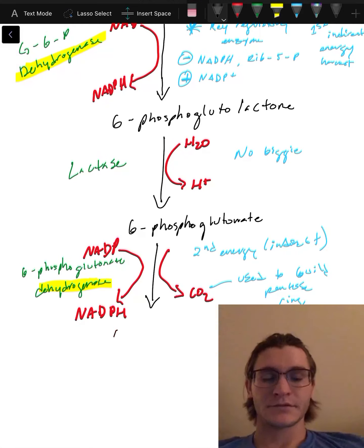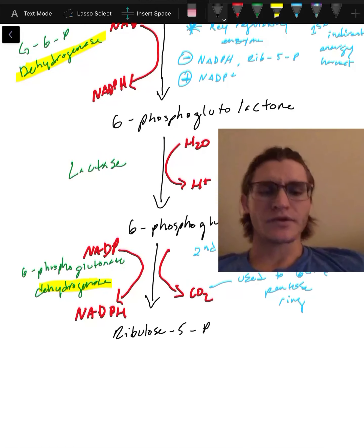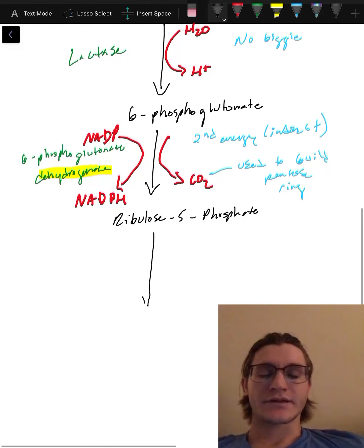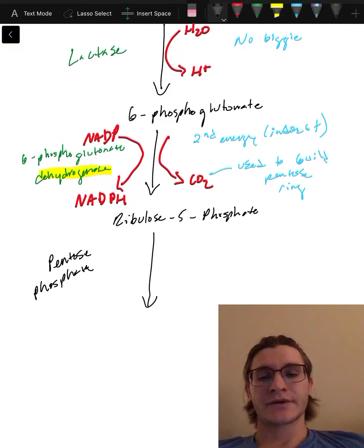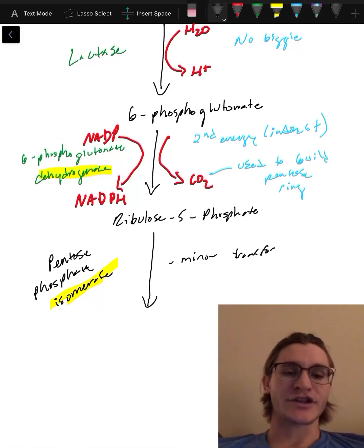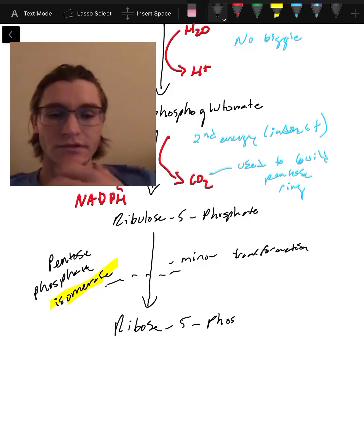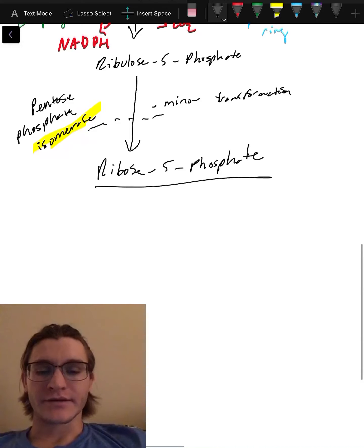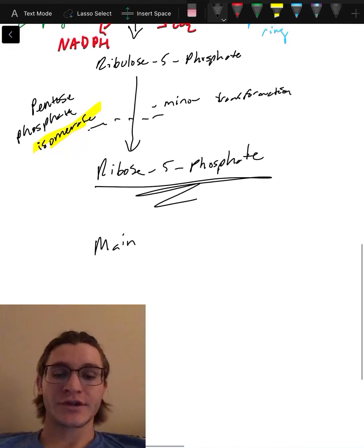Ribose 5-phosphate is then gonna have a simple transformation enzyme called pentose phosphate isomerase. Pentose phosphate isomerase is an enzyme name for things that just change the configuration and make minor changes to the molecule structure. That's gonna make our main product and our final product: ribose 5-phosphate.